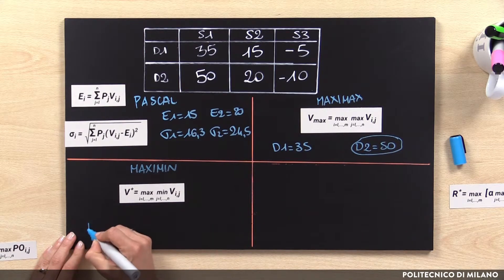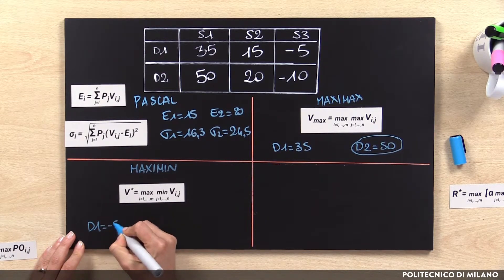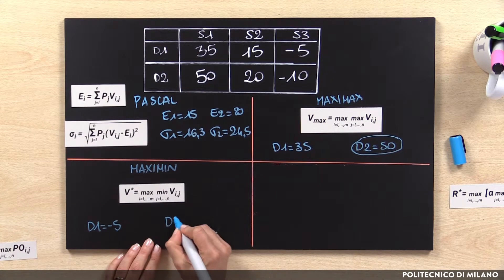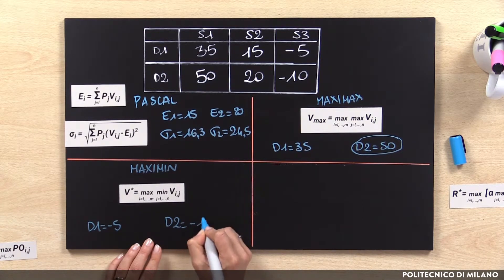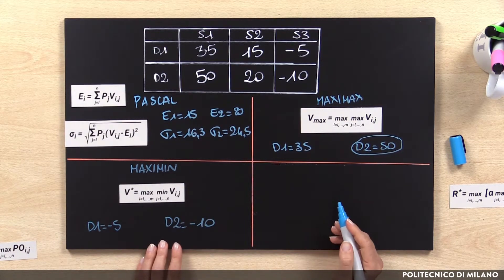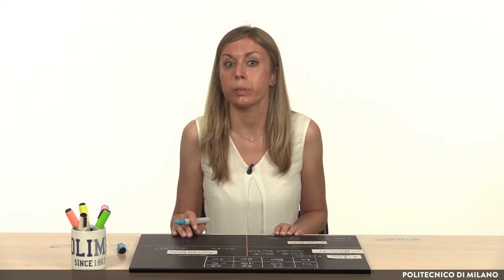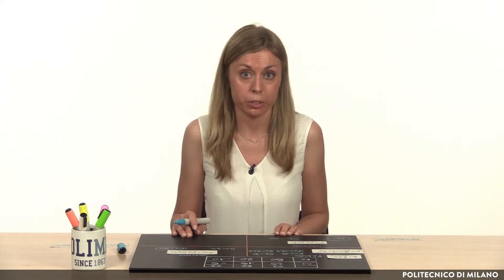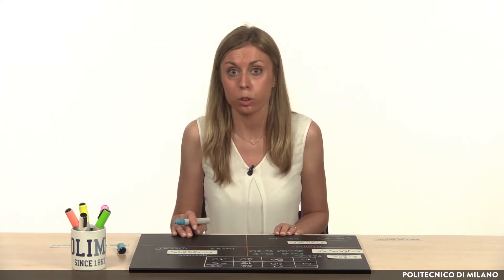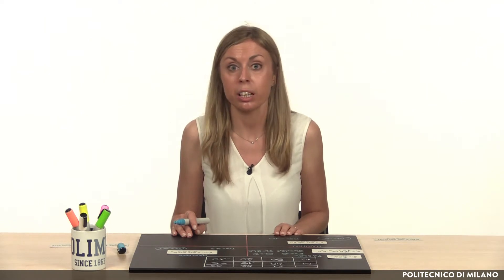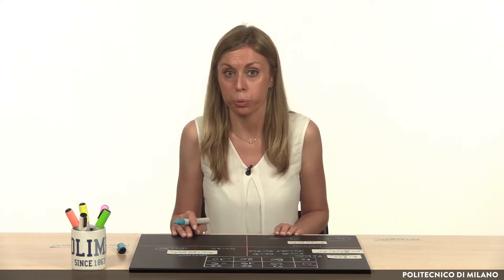In our example, for D1 the worst option is –5, whereas for D2 it is –10. In this case, the decision maker prefers D1. This criterion takes into consideration uncertainty using the prudence principle. On the other hand, this method misses the potential value obtainable if the best scenario were to come true.